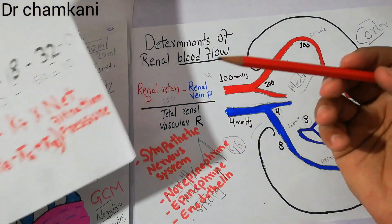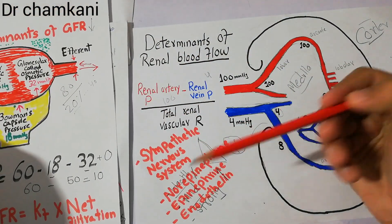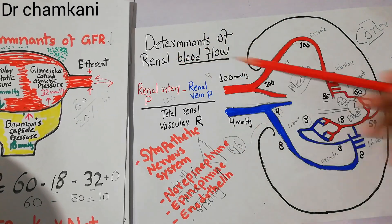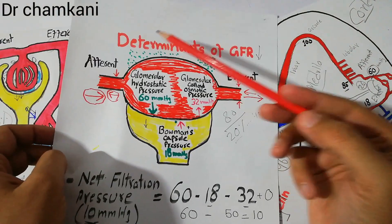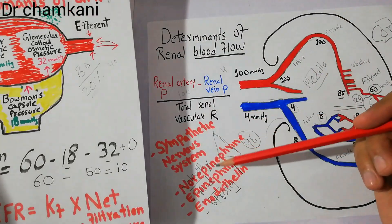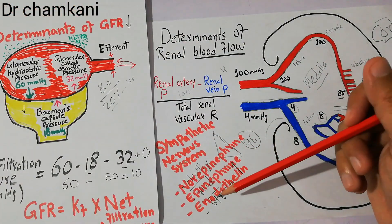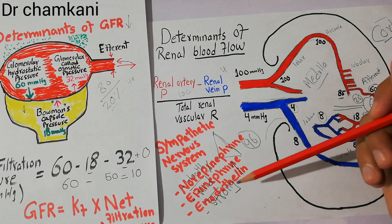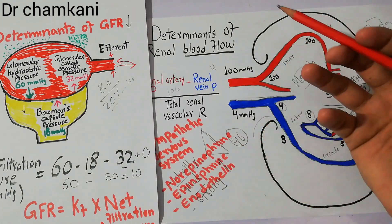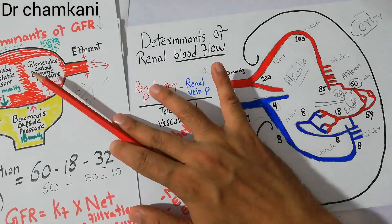That is why the sympathetic nervous system and the release of norepinephrine and epinephrine act as important determinants of renal blood flow and of the GFR, the glomerular filtration rate. Apart from norepinephrine and epinephrine, another autacoid known as endothelin also sometimes plays a role in decreasing blood flow and decreasing the GFR.